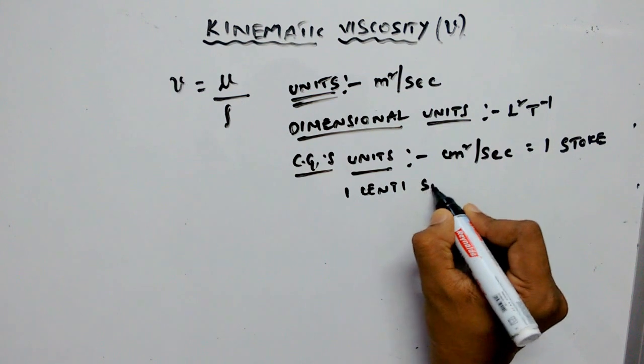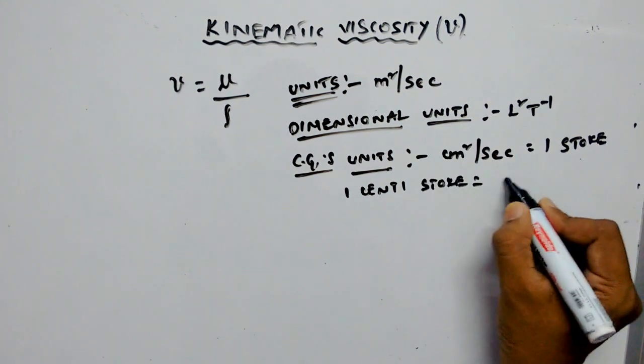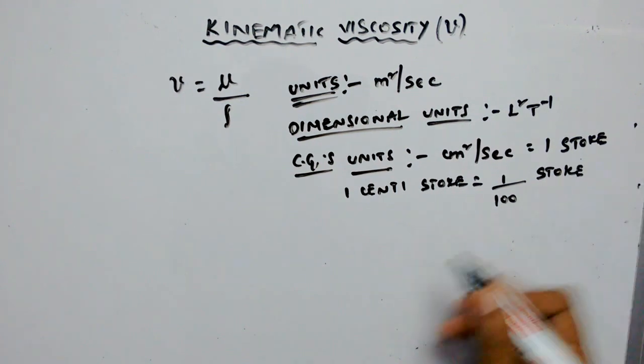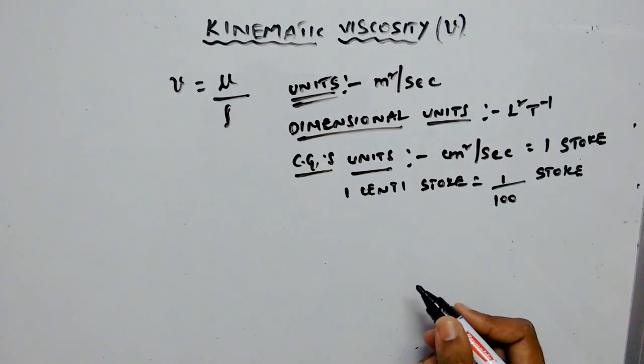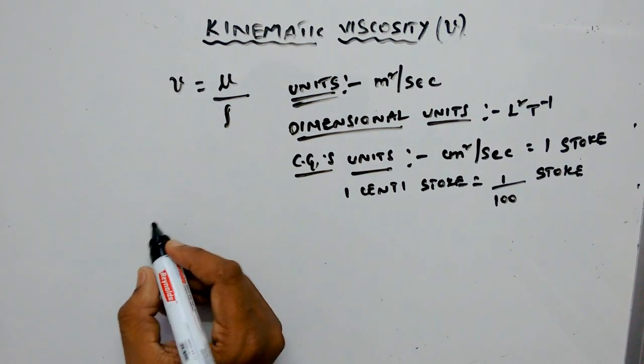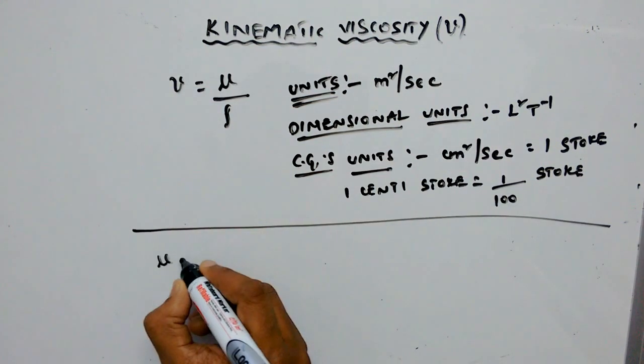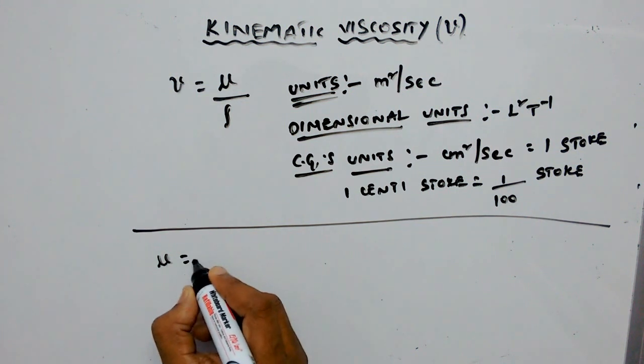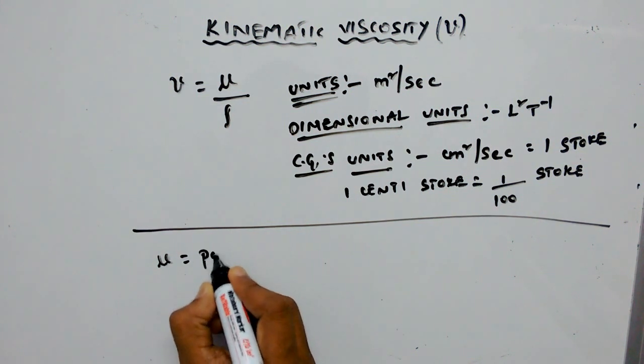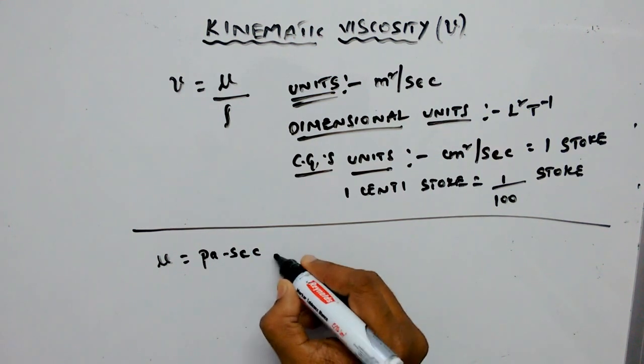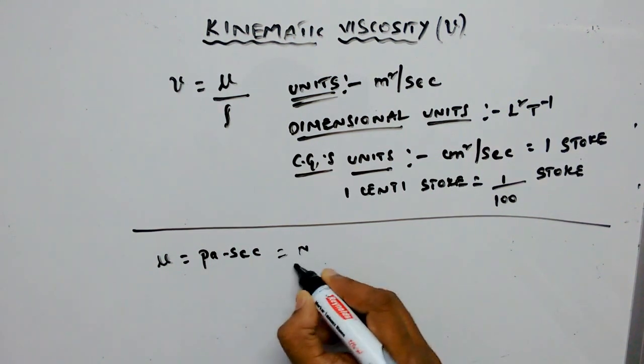one by hundred stoke. Now, the dynamic viscosity units are, in the SI system, pascal seconds. One pascal can be written as...